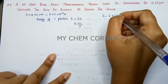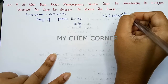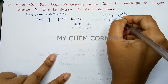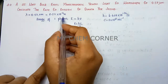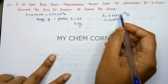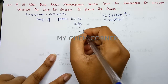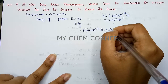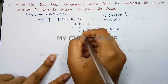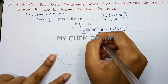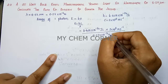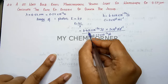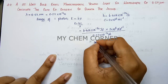Here h is Planck's constant: 6.626 into 10 to the power minus 34 joule second. c is the velocity of light: 3 into 10 to the power 8 meter per second. Velocity is in meters, which is why wavelength was also converted to meters. Substituting: h is 6.626 × 10⁻³⁴ joule second, c is 3 × 10⁸ meter per second, divided by lambda 0.57 × 10⁻⁶ meter. Meters cancel, seconds cancel.